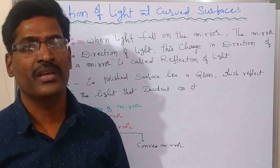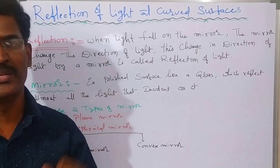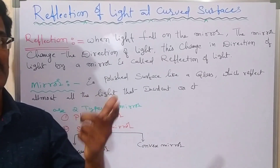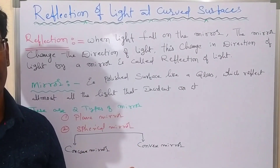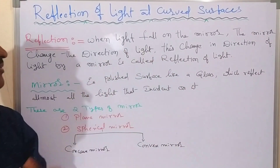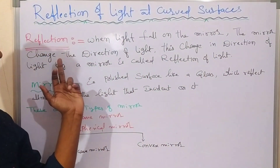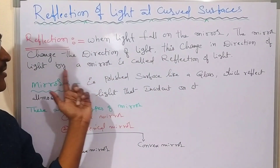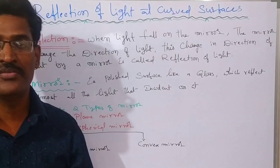Reflection of light means that any ray which falls on the surface of the mirror causes that surface to change the direction of that light. Where there is a change in direction of light by the mirror, that is what we call reflection of light. The change in the direction of light by the mirror is called reflection of light.